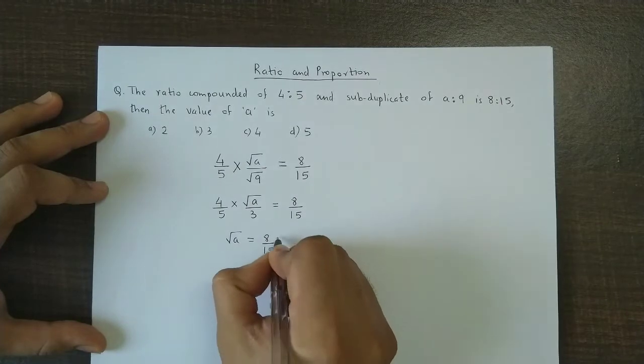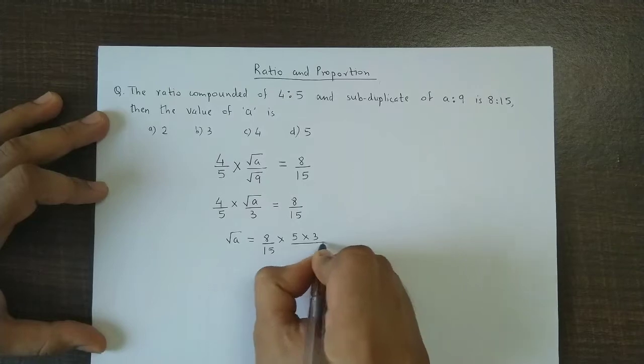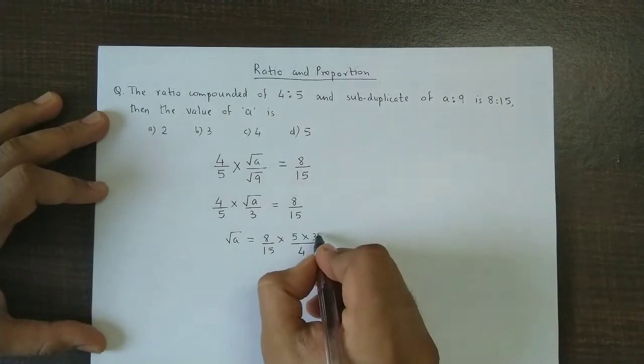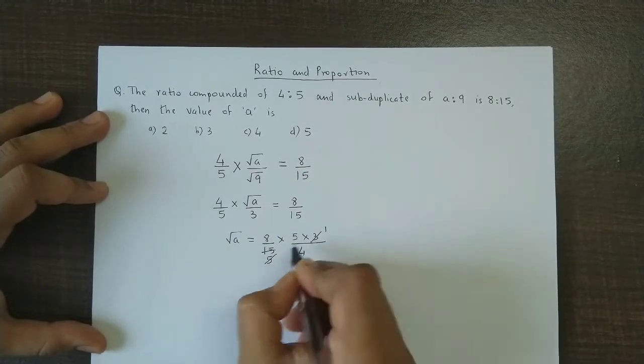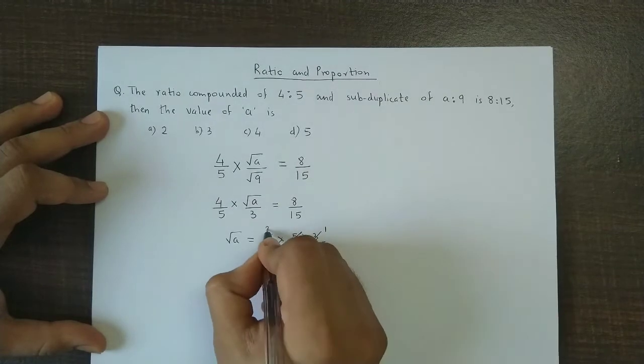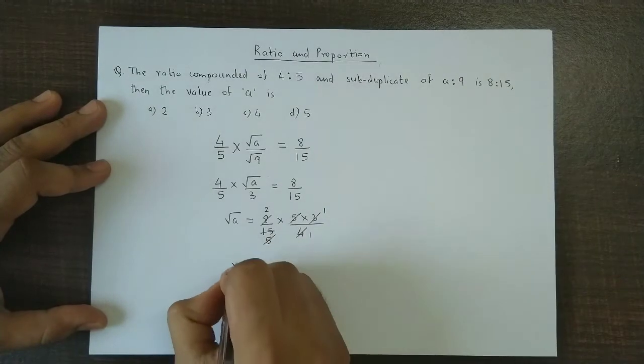The 5s cancel, the 3s give us 3, and 4 divided by 2 gives 2. So what we have is √a = 2.